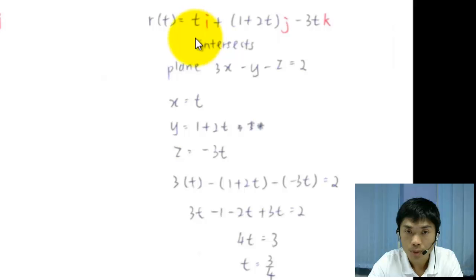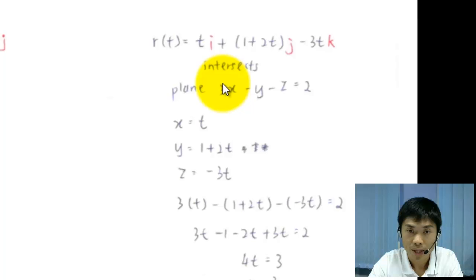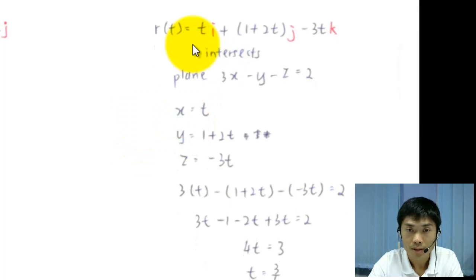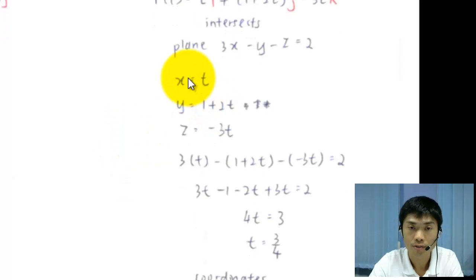So similar concept to be applied here, where the x component of the position vector here should be similar to the x component of the plane here. So we know that from the position vector, the i component refers to x. So x equals t, y equals 1 plus 2t, and z equals negative 3t. So you have the values of x, y, z in terms of the parameter t,